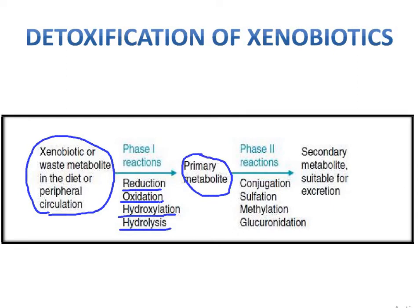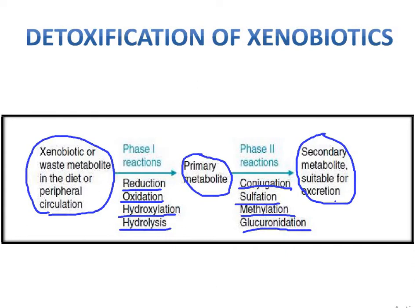Whatever the end products of these reduction, oxidation, hydroxylation, and hydrolysis reactions are, primary metabolites are formed. From the primary metabolites, the process moves to Phase 2 reactions. Phase 2 reactions include conjugation, sulfation, addition of sulfate, methylation, and glucuronidation. Once the secondary metabolites stage is reached, those metabolites are suitable for the excretion process and will finally be excreted from the body.